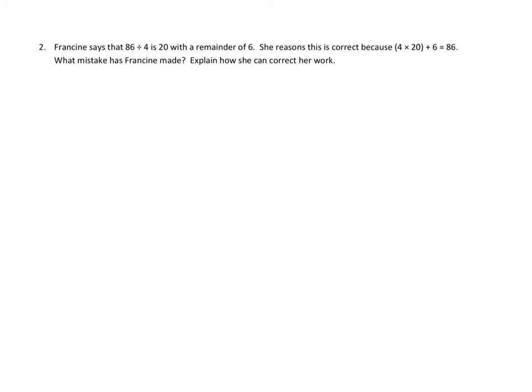Francine says that 86 divided by 4 is 20, with a remainder of 6. She reasons this is correct because 4 times 20 plus 6 equals 86. What mistake has Francine made? Explain how she can correct her work. I think the easiest way to do this problem and figure out what Francine has done is to just do the problem for ourselves and then see where maybe Francine had her reasoning go astray.